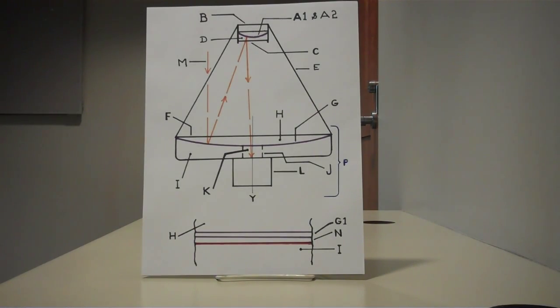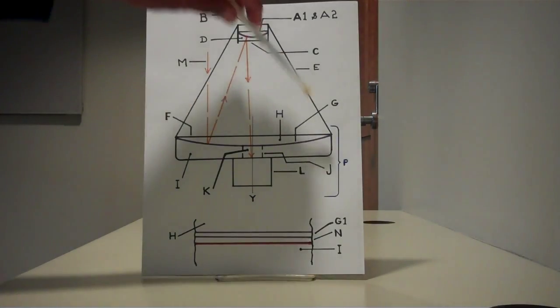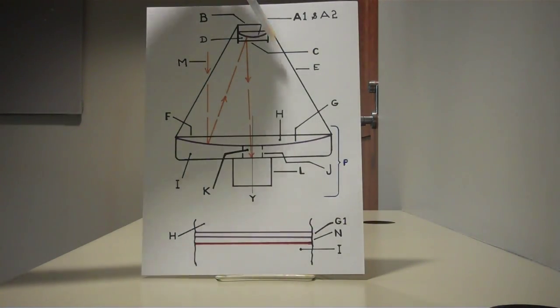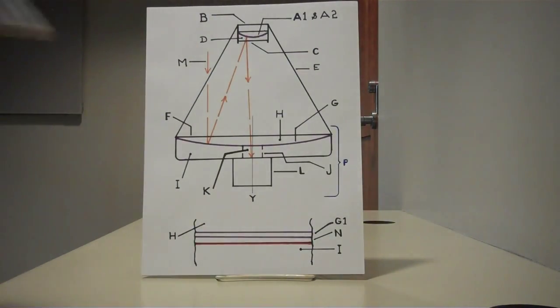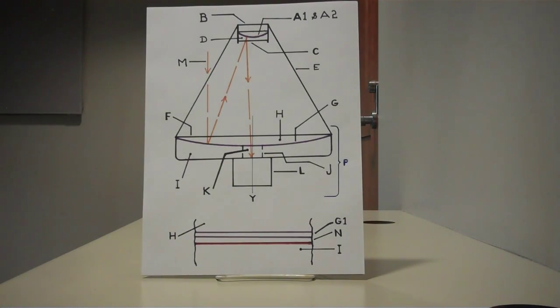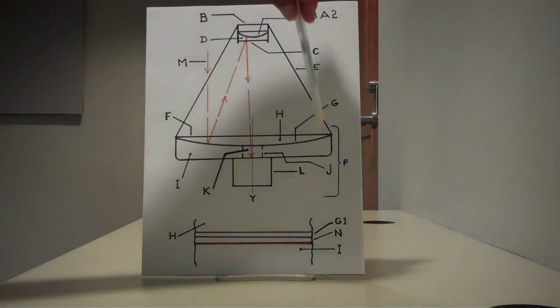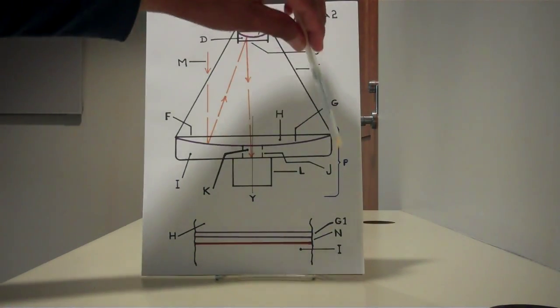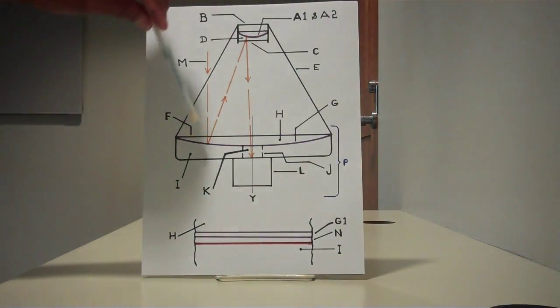Now the secondary mirror housing B is attached to braces E at one end and the primary mirror structure P at the other end.